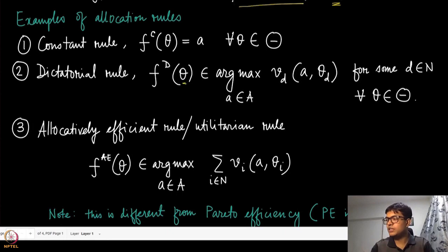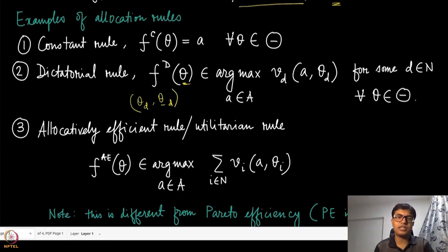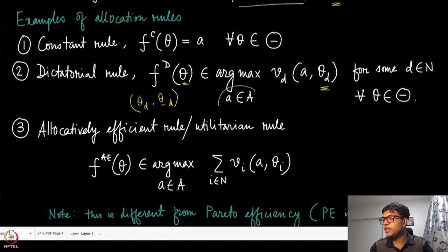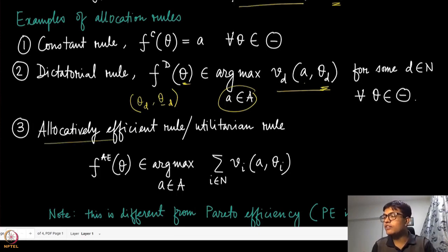Here, theta_d is the dictator's type and theta_{-d} is the type of all other players apart from the dictator. But the allocation function F does not look at anybody else's type — it is just picking the allocation which maximizes the valuation of the dictator. That is the dictatorial rule. A mechanism or allocation rule could also be the allocatively efficient rule, also called the utilitarian rule.